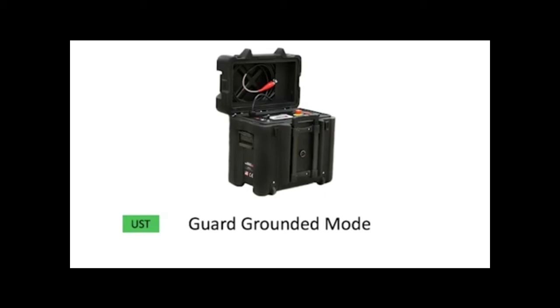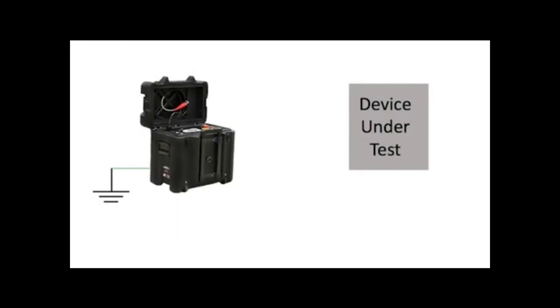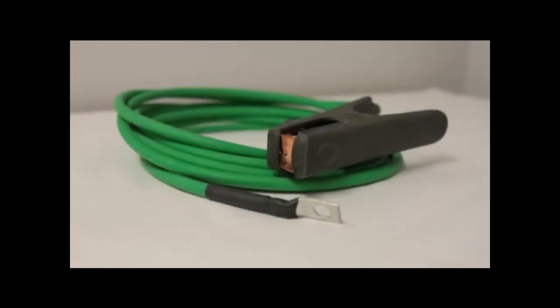This mode is used when very sensitive measurements are required. To begin testing in ungrounded mode, connect the DC HiPOT to the ground using the grounding cable.